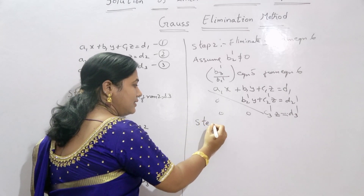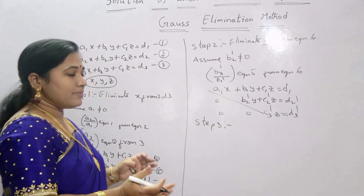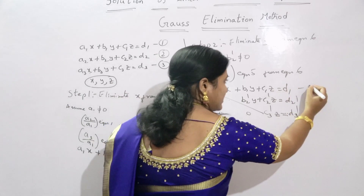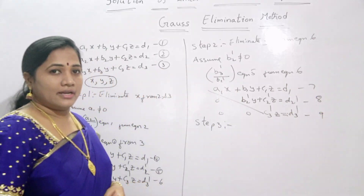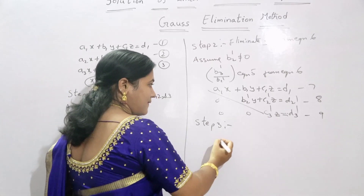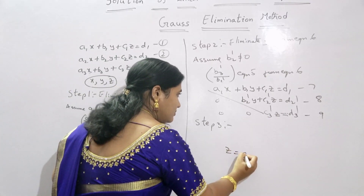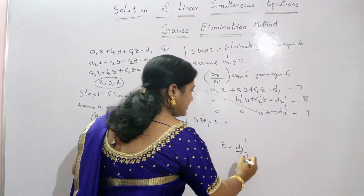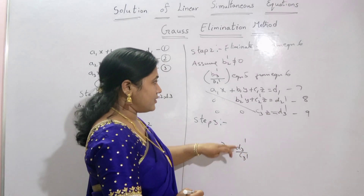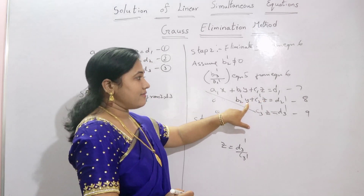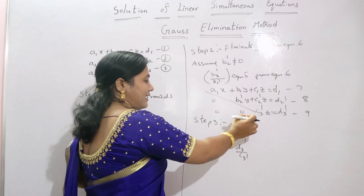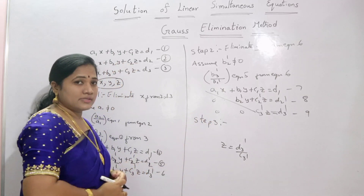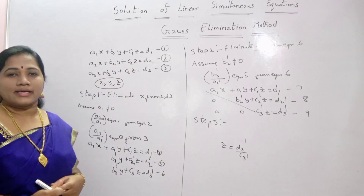The next step is Step 3: by back substitution we will get the unknown values. This is equation 7, equation 8, and equation 9. From equation 9: z = d3'/c3'. Substituting z in equation 8 gives y. Substituting y and z in equation 7 gives x. This is the procedure to find the unknown values using the Gauss elimination method.